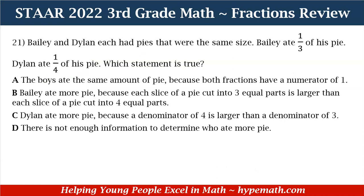Let's look at question number 21. Number 21 says: Bailey and Dylan each had pies that were the same size. Bailey ate 1 third of his pie. Dylan ate 1 fourth of his pie. Which statement is true? A: The boys ate the same amount of pie because both fractions have a numerator of 1. B: Bailey ate more pie because each slice of a pie cut into 3 equal parts is larger than each slice of a pie cut into 4 equal parts. C: Dylan ate more pie because a denominator of 4 is larger than a denominator of 3. And D: There is not enough information to determine who ate more pie.